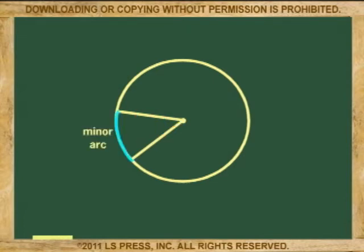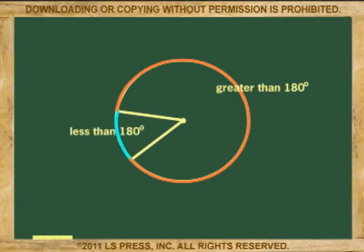Now this arc is called the minor arc, and what is left on the circle is called the major arc. Major arcs are greater than 180 degrees, and minor arcs are less than 180 degrees.